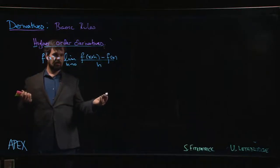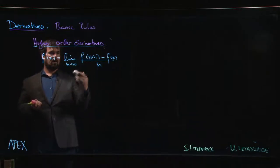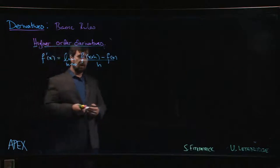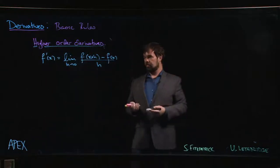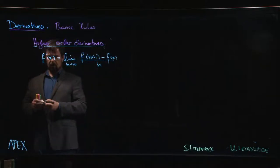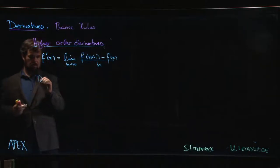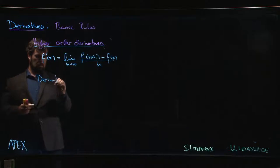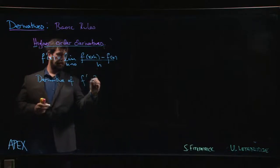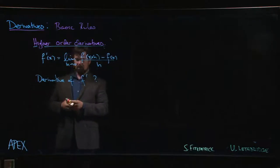The thing to realize here is that the derivative is a function, right? As long as this limit exists at each point, then from our original function we get this new function called the derivative. Since it's a function, it may itself have a derivative. So we can say, well, what about if we take the derivative of f prime? If you do, you get what's called the second derivative.